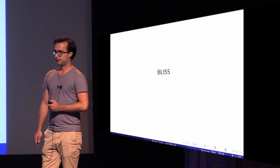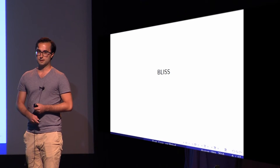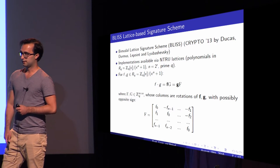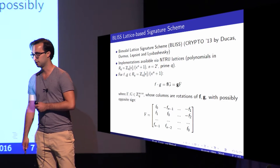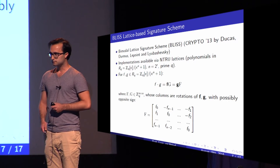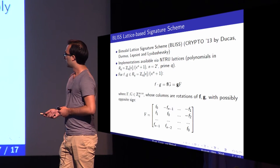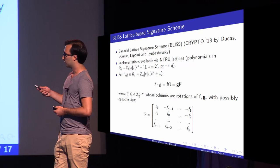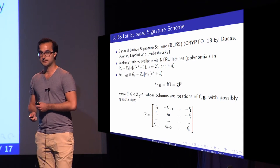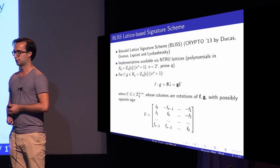I will briefly introduce BLISS. It's a lattice-based signature scheme — you need quite a bit of lattice theory, but I'll keep it to the basics to understand our attack. BLISS stands for Bimodal Lattice Signature Scheme, introduced at Crypto 2013 by Leo Ducas and co-authors. All implementations use NTRU lattices, which are polynomials in the ring R_Q — a polynomial ring where polynomials are reduced by x to the power n plus 1, the degree n is a power of 2, and each coefficient is reduced mod Q, where Q is a prime.